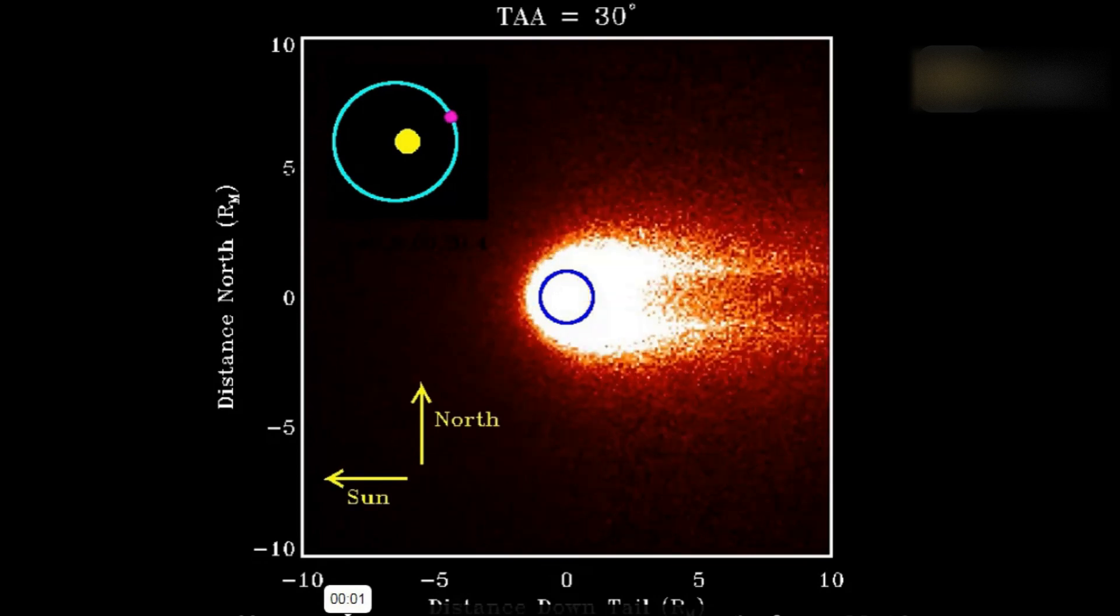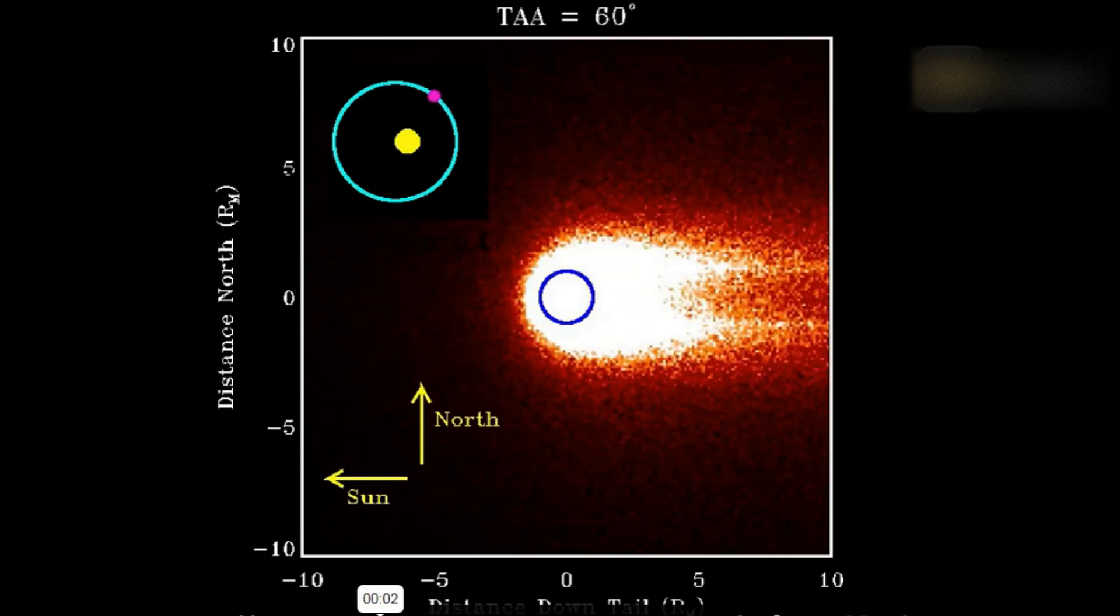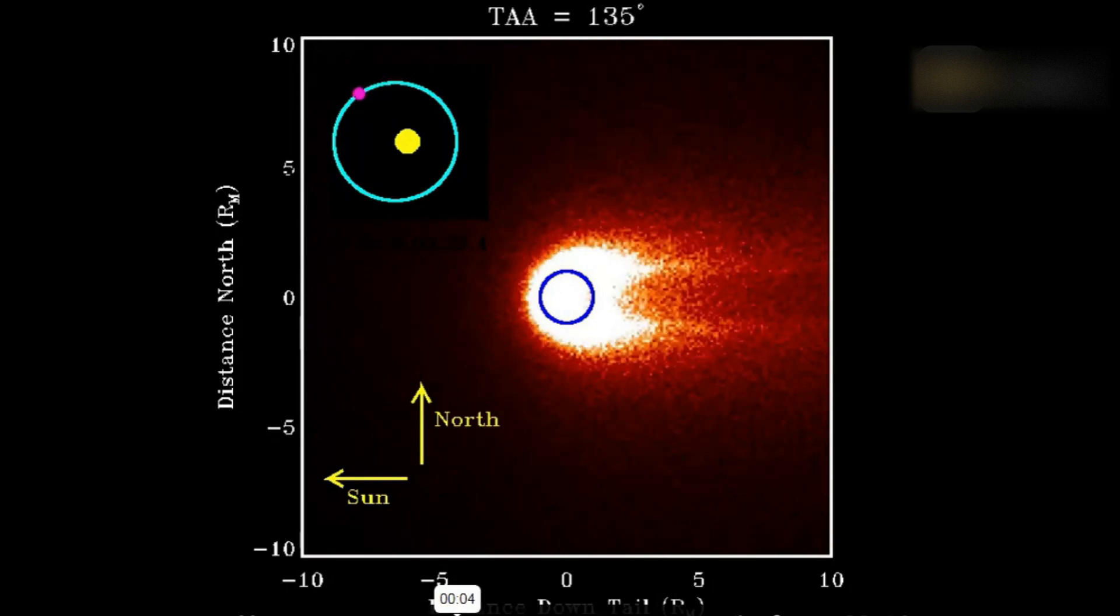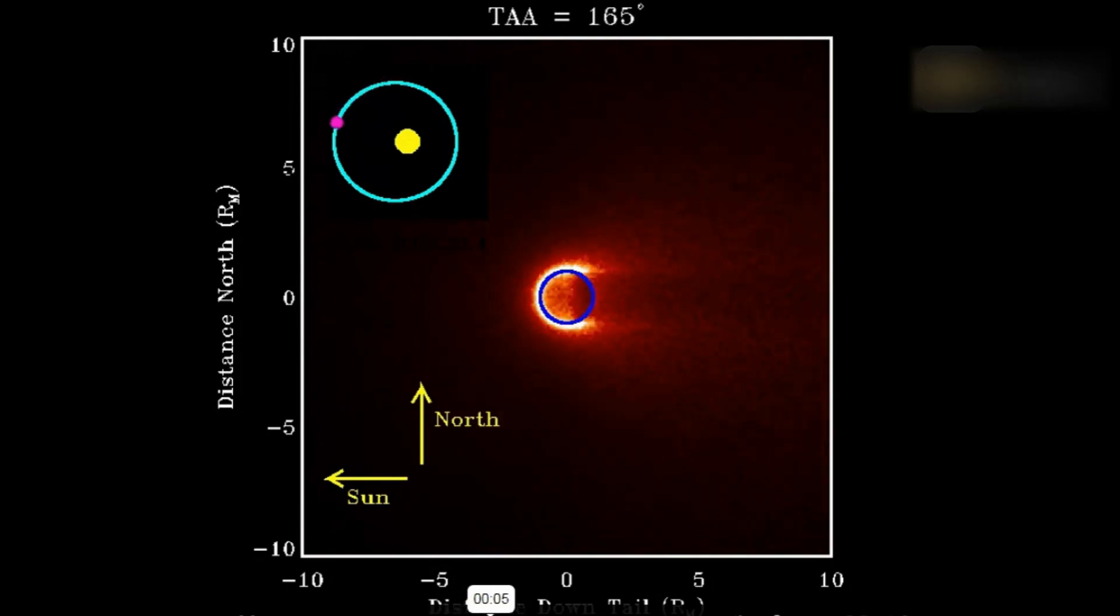As Mercury circles the Sun, its tail gets brighter and dimmer. This film from NASA's Messenger spacecraft, which spent years closely observing Mercury's tail, displays the predictable pattern.